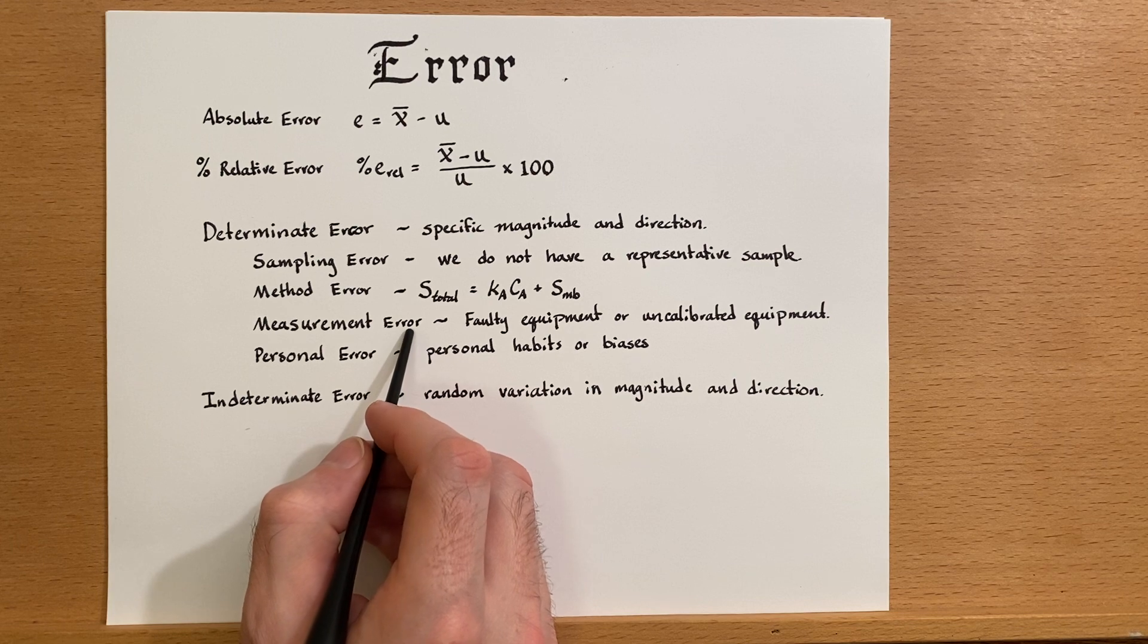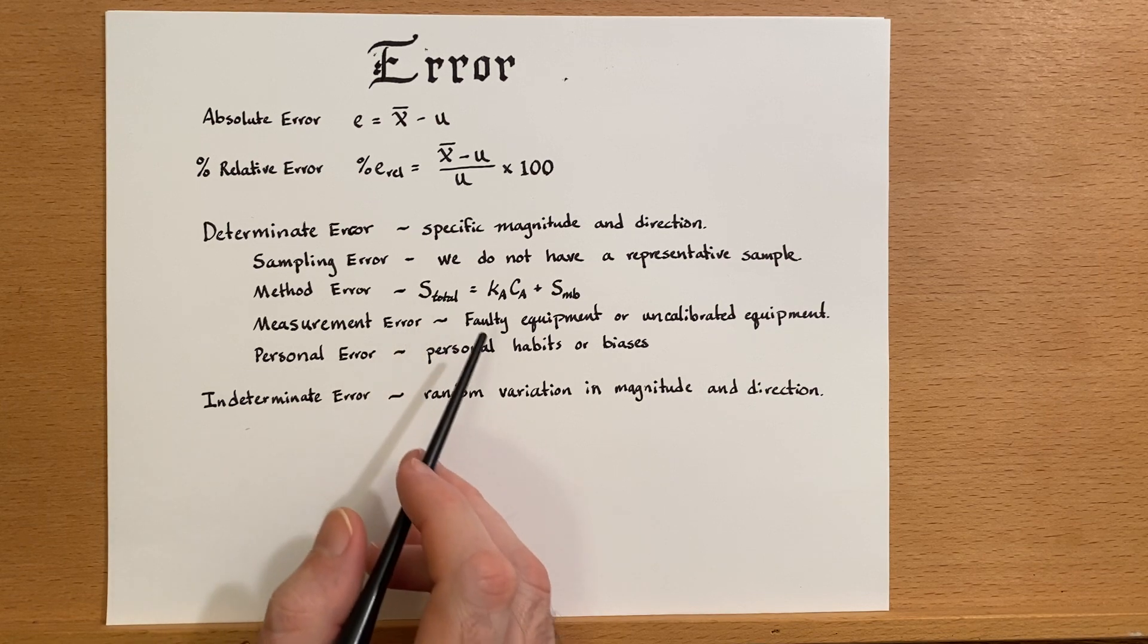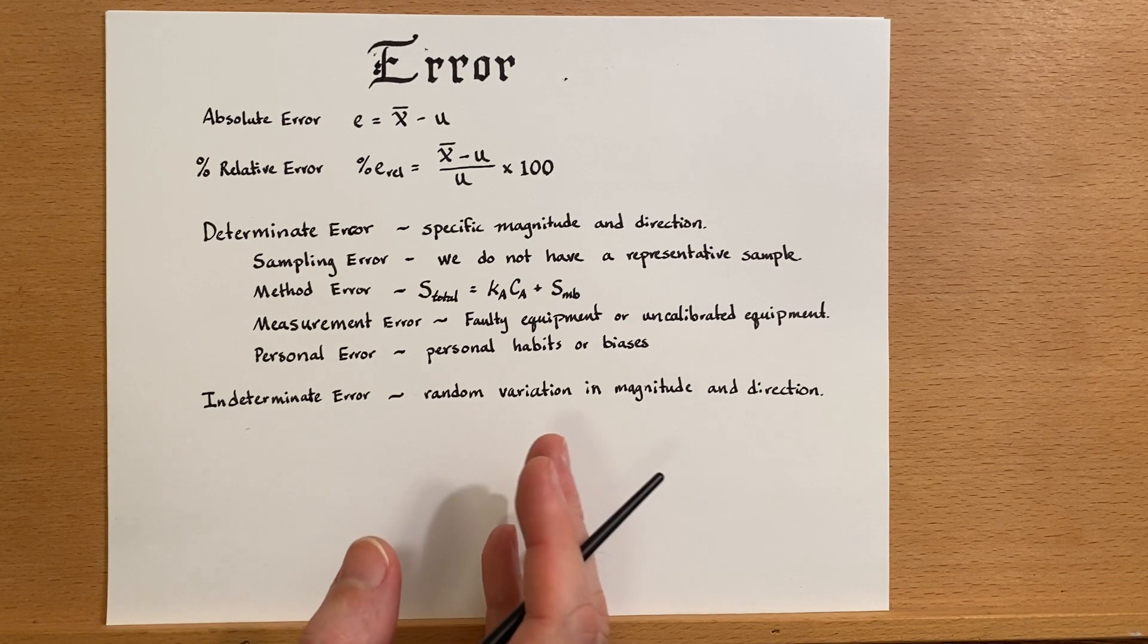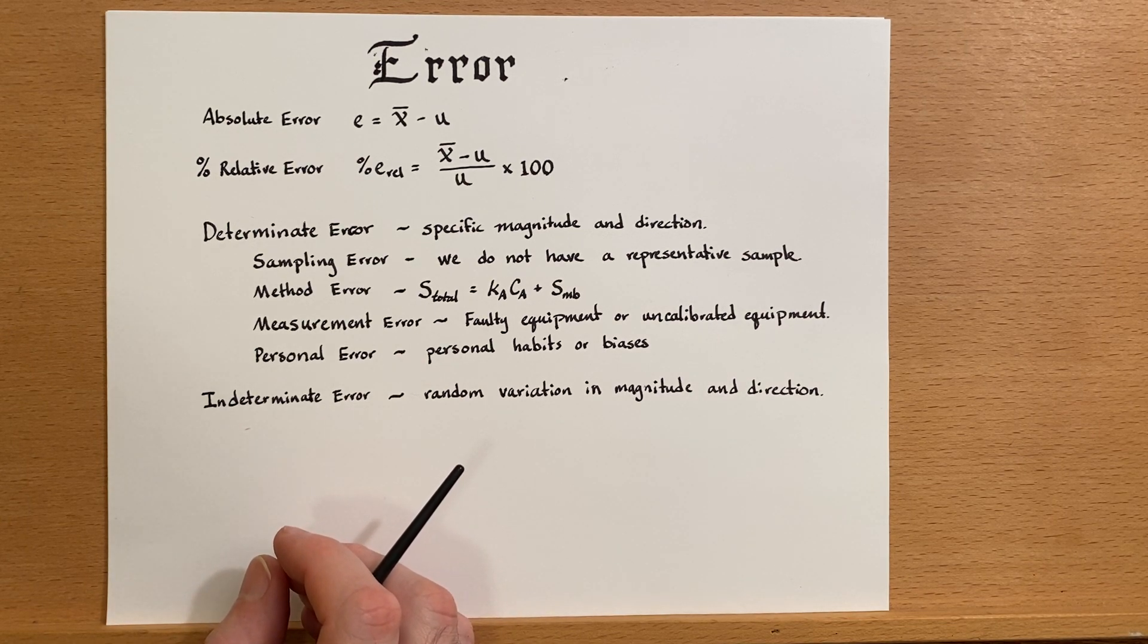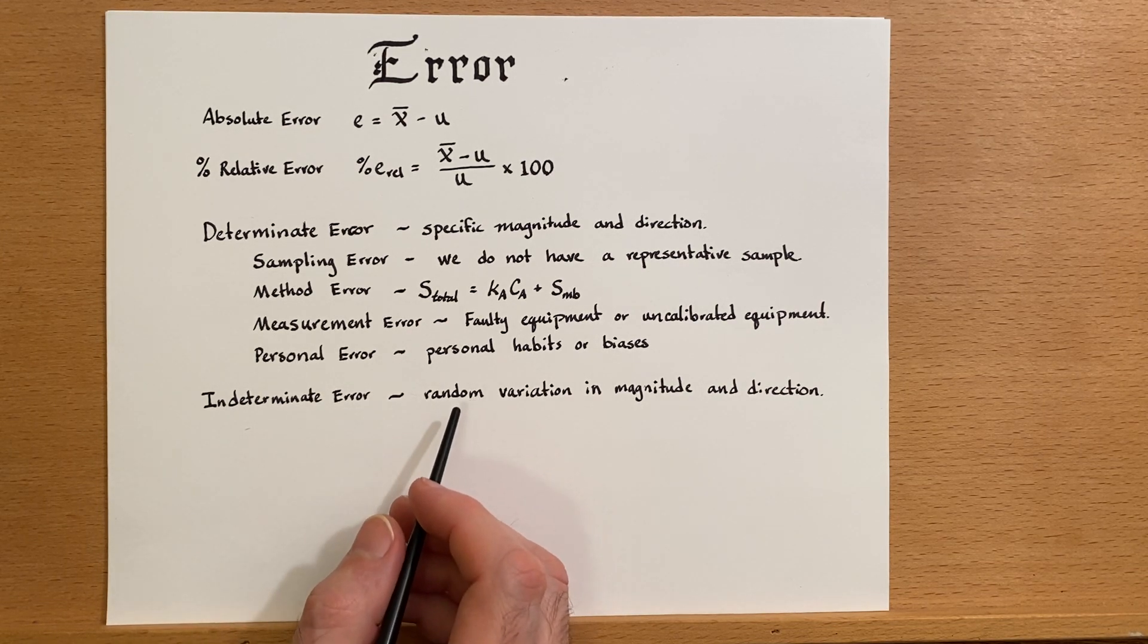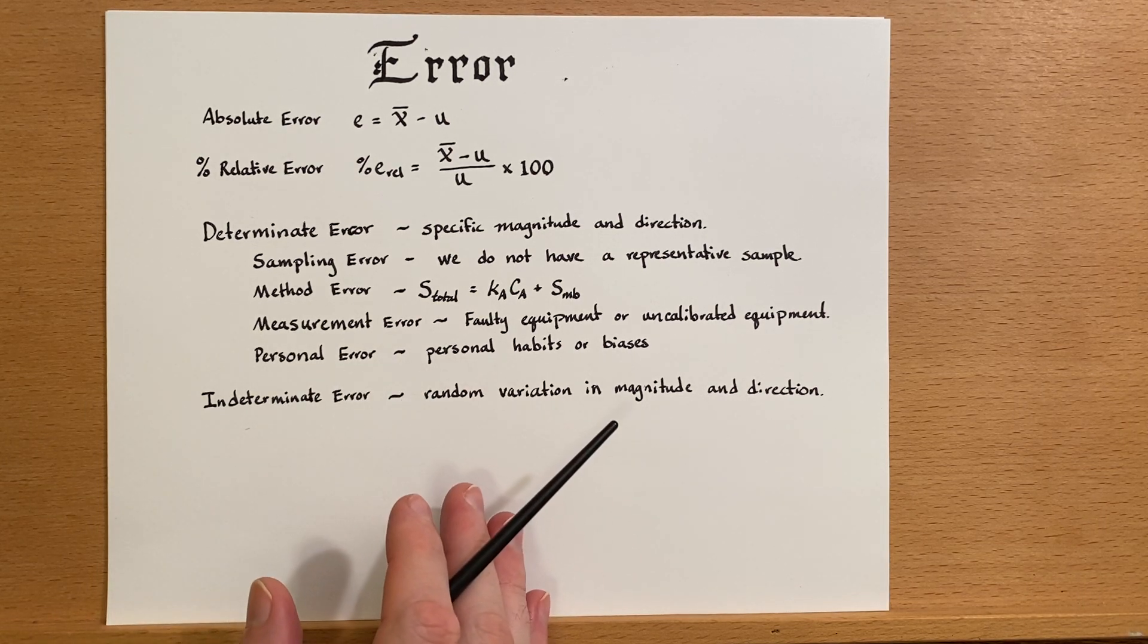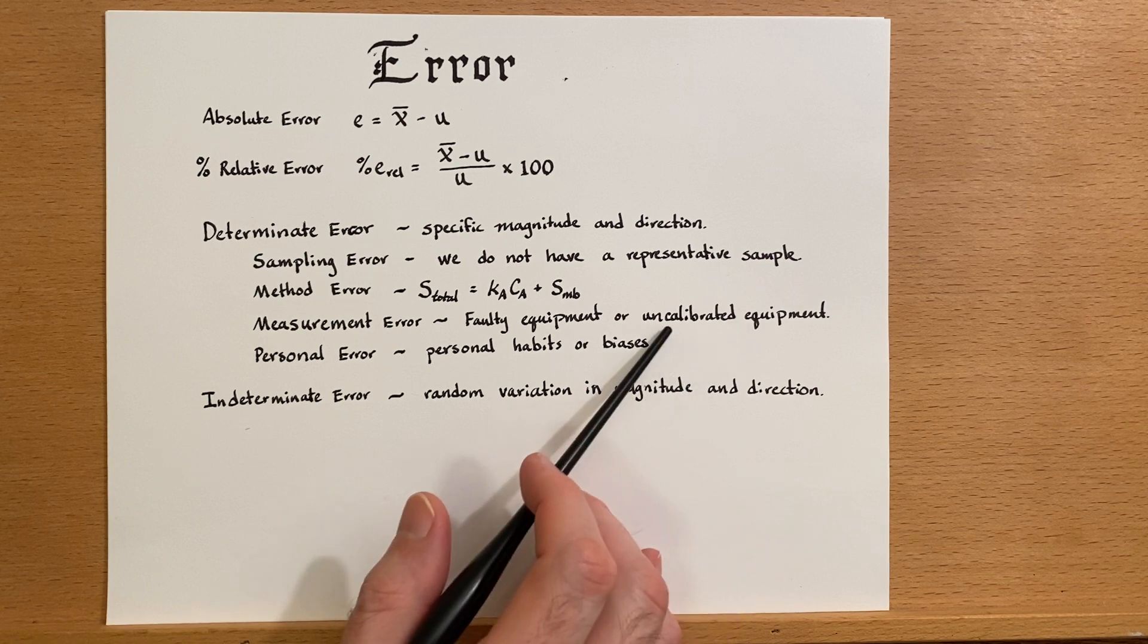There are also measurement errors that would fall under the determinant error umbrella. This could result from faulty equipment or uncalibrated equipment. Say we have a pipette and it says on it that it is 10 milliliters, but when we actually use it, it's 9.8 milliliters. Well, this is a determinant error. It's always delivering less than what we expect. This could be remedied by calibrating the equipment and finding out it actually delivers 9.8, and that's not a problem for our analysis as long as we use the new determined value or we calibrate the equipment.